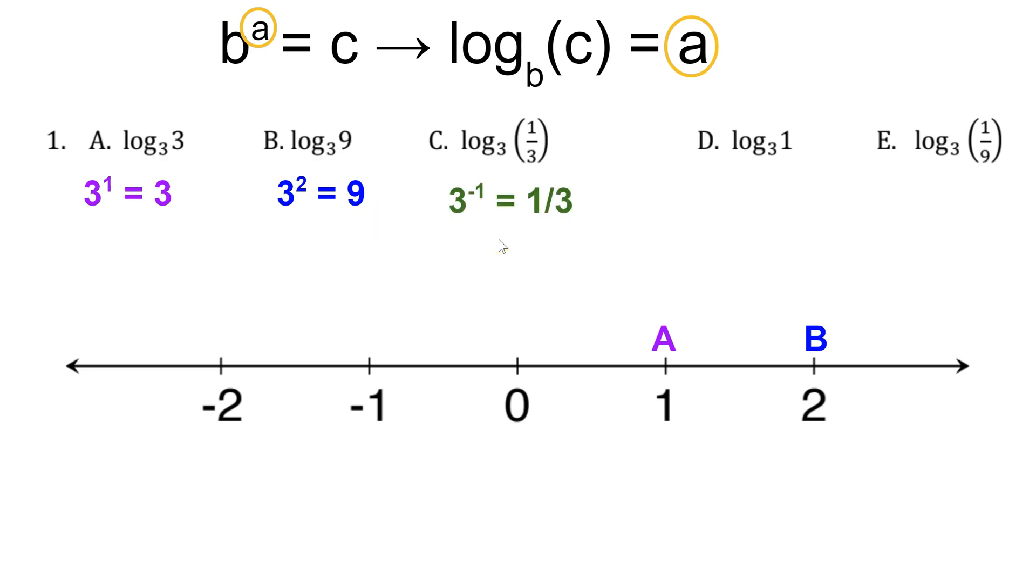We know that 3 to the negative first power is 1 third, which means c should go at negative 1 on the number line. We know that anything to the 0 power is 1. So in this case, d is going to go at zero. And anytime you have a log of any base that equals 1, it will be zero because anything to the 0 power is 1. So that could help you fill in a lot of other points on this task.